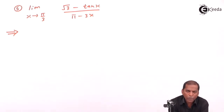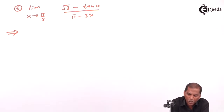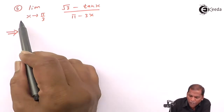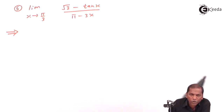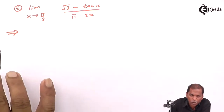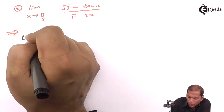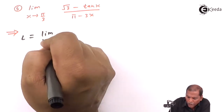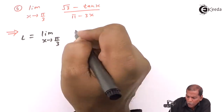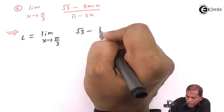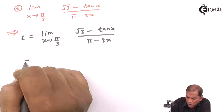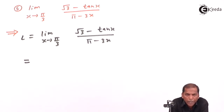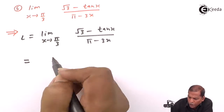Hello friends, now we see problem number 5, which is also based on the substitution method from the chapter on limits. The problem is: limit as x tends to π/3 of (√3 − tan x) / (π − 3x). Let's see the solution. L equals limit as x tends to π/3 of (√3 − tan x) / (π − 3x). Here we substitute the limit as x = π/3.